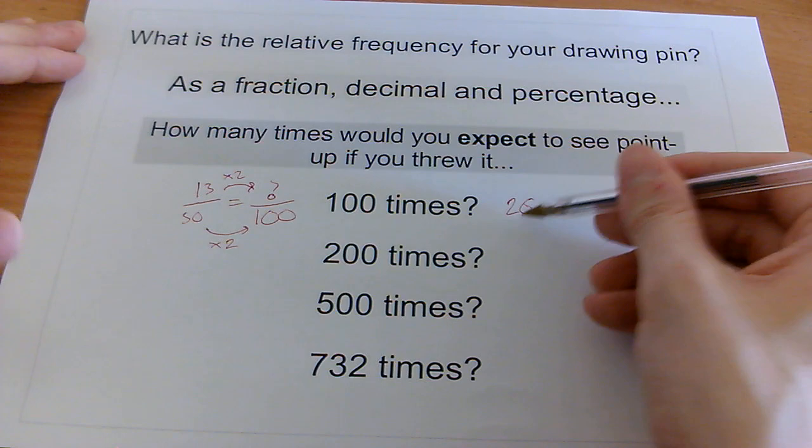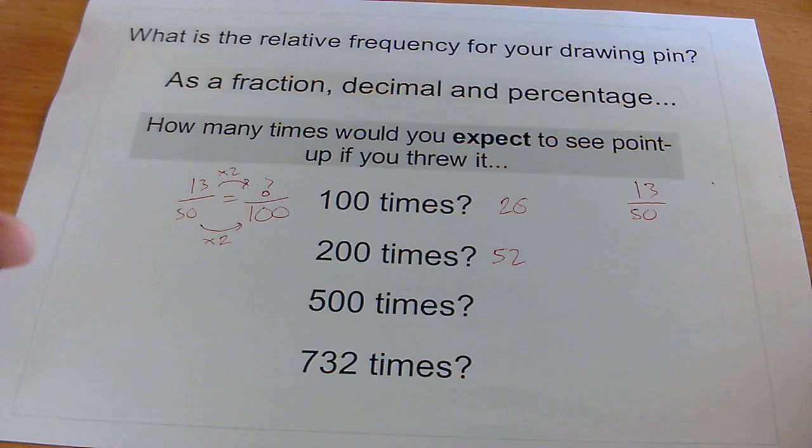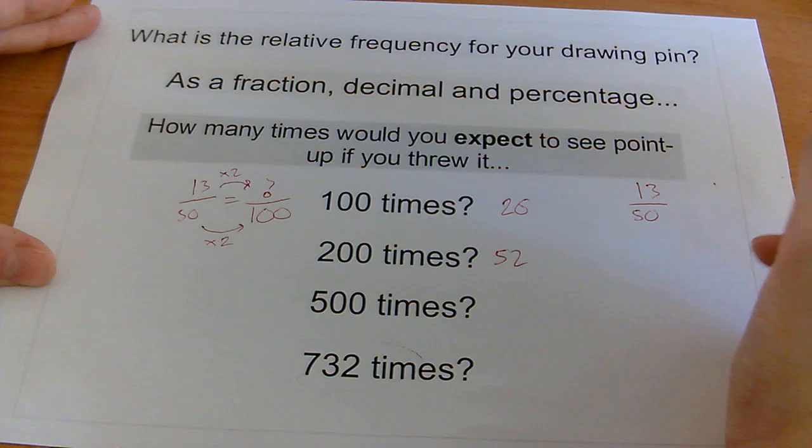And I'll do the same thing for 200. In fact, I could just double that again, because if that's the 100, I'll double that again, and I'll get my 200, which in this case is going to be 52. Now, your numbers will be different, because you've got a different drawing pin, different experiment, maybe a different object. 500 would be done in a similar way. I could just multiply this one by 5. This one is obviously more tricky.